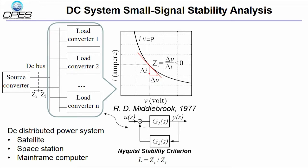He proposed to study the stability issue of DC converter systems by applying Nyquist stability criteria to the impedance ratio between converters. This impedance-based stability analysis can be summarized in four steps.